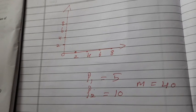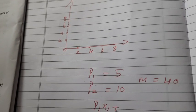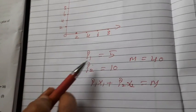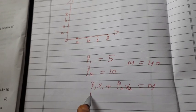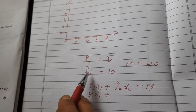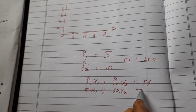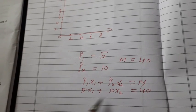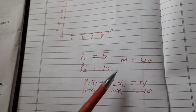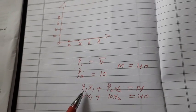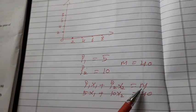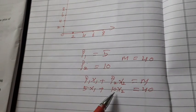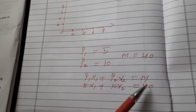First question: write the budget line equation. The budget line equation is P1·X1 + P2·X2 = M. Substituting the values: 5X1 + 10X2 = 40. This is the first answer and it is worth one mark.